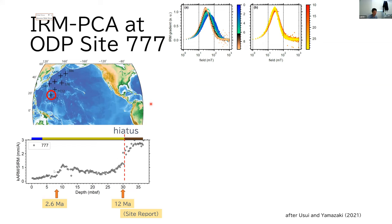And this site also shows high ARM susceptibility in the deeper part of the core and lower ARM susceptibility in the upper part of the core.